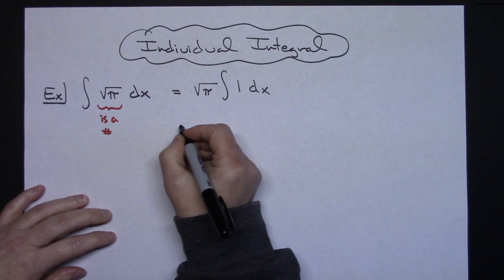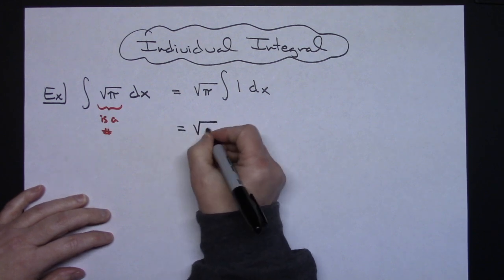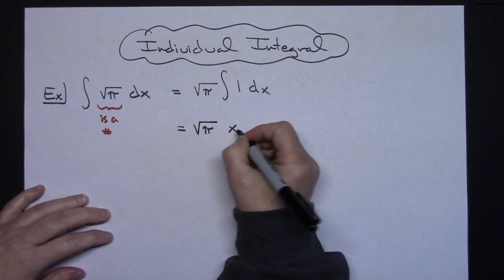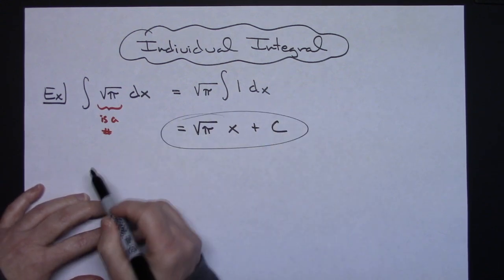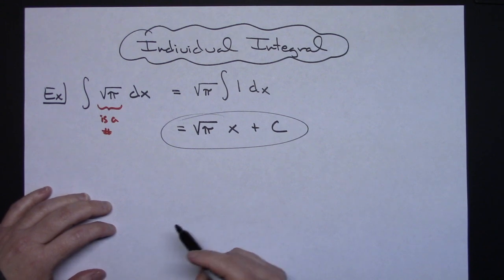So it's going to be a very simple integration here of square root of pi times x plus C. Okay, so definitely straightforward and then very simple integral there, but just for someone new starting out in calculus that might look a little tricky.